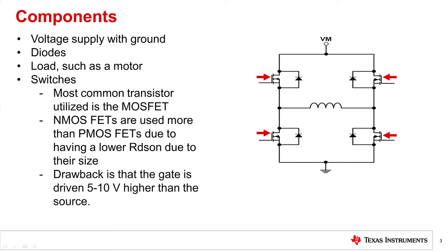The drawback of N MOSFETs is that the gate needs to be driven 5 to 10 volts higher than the source to turn on the high side FET. This means that the high side FET requires a charge pump or bootstrap circuit to turn on. Motor drivers integrate this charge pump or bootstrap.